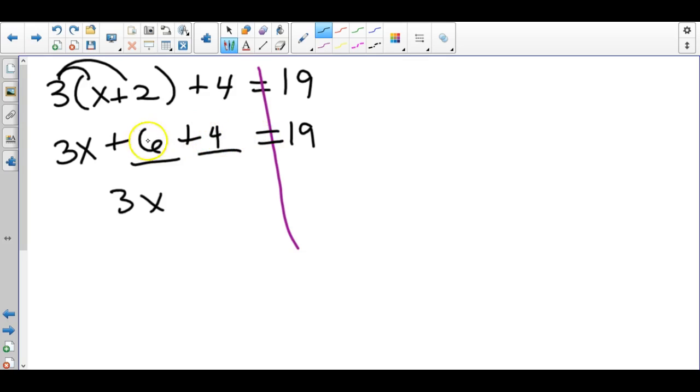Now after we've done the distribution step, we may still have some like terms. 6 and 4 can combine together—they are like terms. Again, same side of the equal sign means you keep whatever signs they are. So just positive 6 plus 4 is positive 10. Now we can start doing our opposites. Opposite of adding 10 is minusing 10, and opposite of multiplying by 3 is dividing by 3.